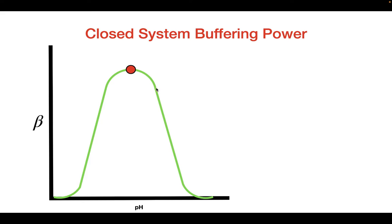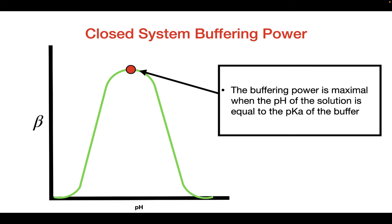So in a closed system, the maximal buffering power is going to be when the pH of the solution is equal to the pKa of the buffer.